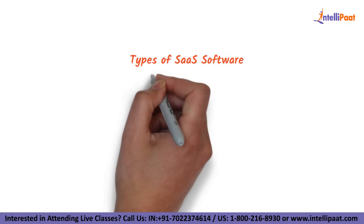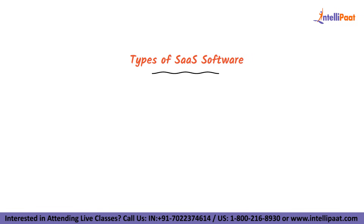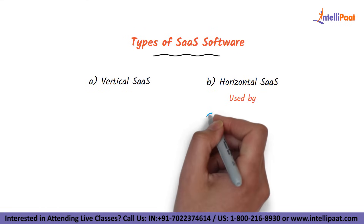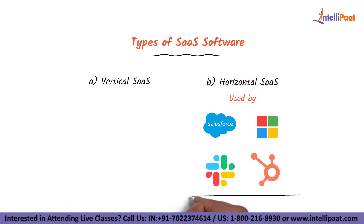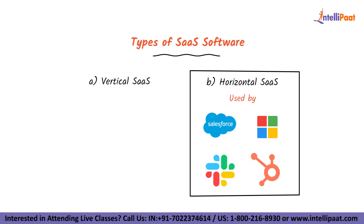Now that we have discussed the components of SaaS architecture, let us move on to understand the types of SaaS software. Broadly speaking, there are two types: vertical SaaS and horizontal SaaS. A horizontal SaaS is a structure used by established cloud services such as Salesforce, Microsoft, Slack, HubSpot, etc. The horizontal model allows big businesses to cater to a broad customer base from ranging industries to run their business effectively and efficiently.